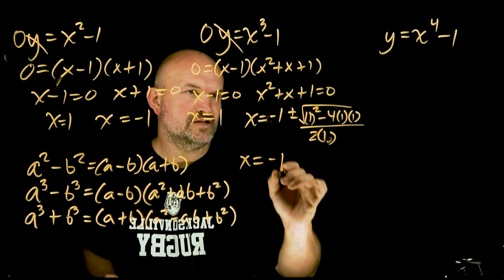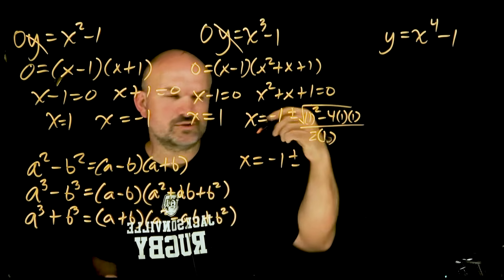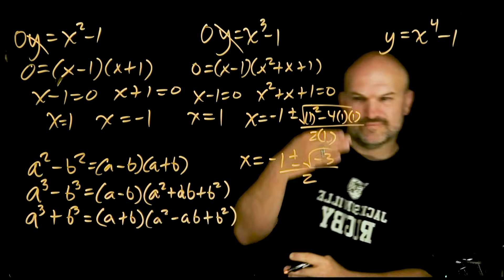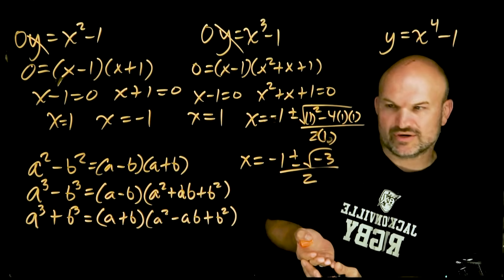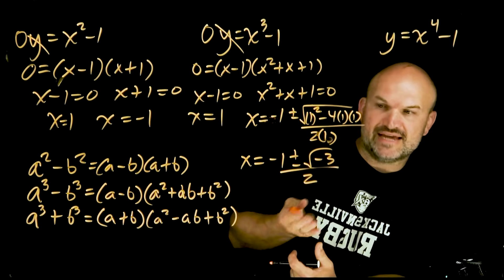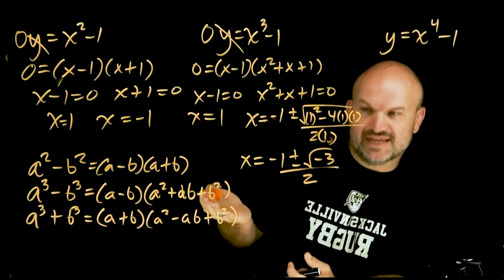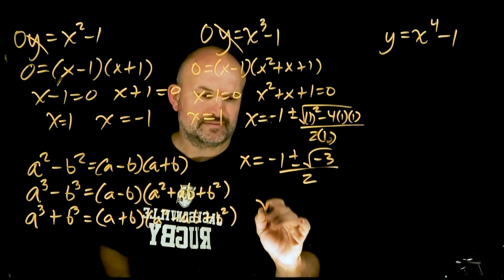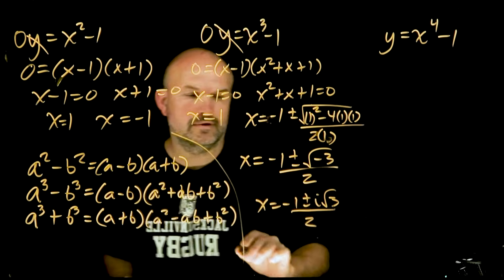So I can simplify this. Negative one plus or minus, one squared is going to be one minus four, so that's going to be a negative three, divided by two. Hopefully you recognize you cannot take the square root of a negative number in our real number system. So what this is actually going to represent is two imaginary or complex solutions. I can simplify the square root of negative three to i square root of three.